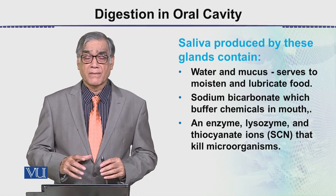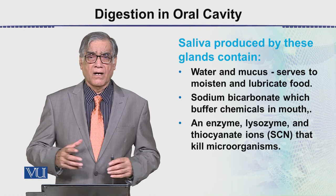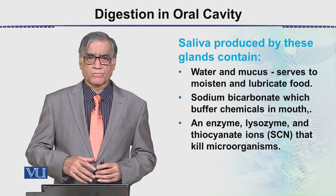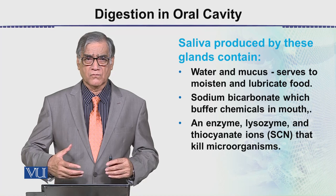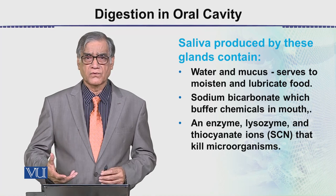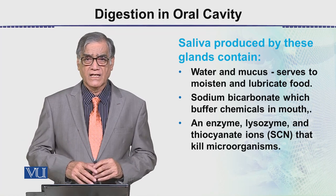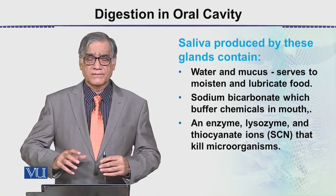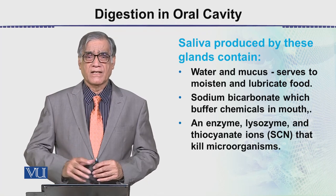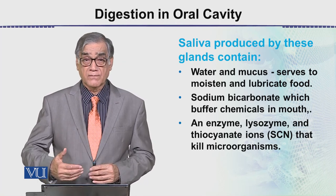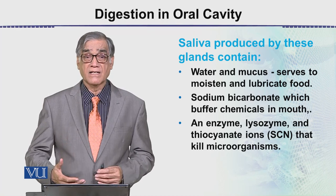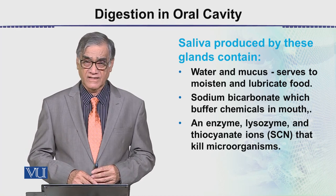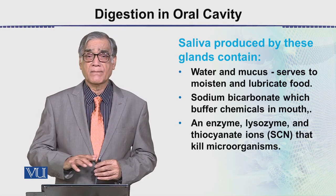Sodium bicarbonate acts as a buffer chemical in the mouth. Its purpose is to maintain the pH, because our food is of different types — some food is alkaline and some is acidic. When we eat it, the sodium bicarbonate brings the pH to a point where the enzymes — which are ptylin and amylase — can act properly on the food.